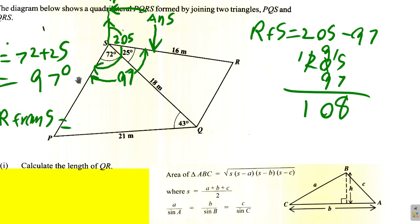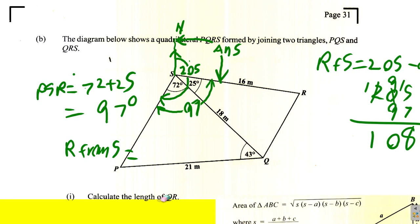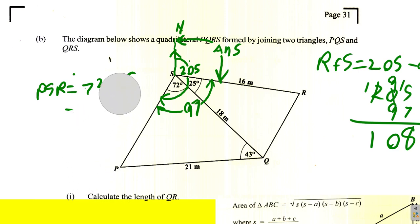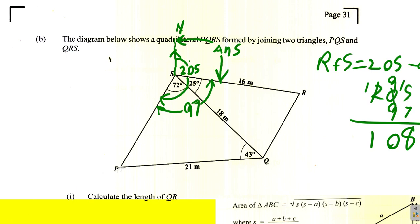S from P — when you say 'from P', P is where you draw your north line. You put your arc, and bearings are measured from north in a clockwise direction. So the bearing of S from P would be this angle here.